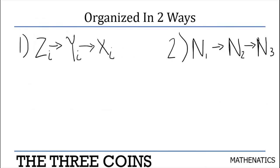Firstly, these can be organized in two ways. The first way that they can be organized is Z1 must come before Y1, which must come before X1. The second way in which they have to be organized is that N1 must come before N2, must come before N3. What I mean by those is that if you take, let's say, Y2, then the Z2 symbol must come before the Y2 symbol, which in turn must come before the X2 symbol.